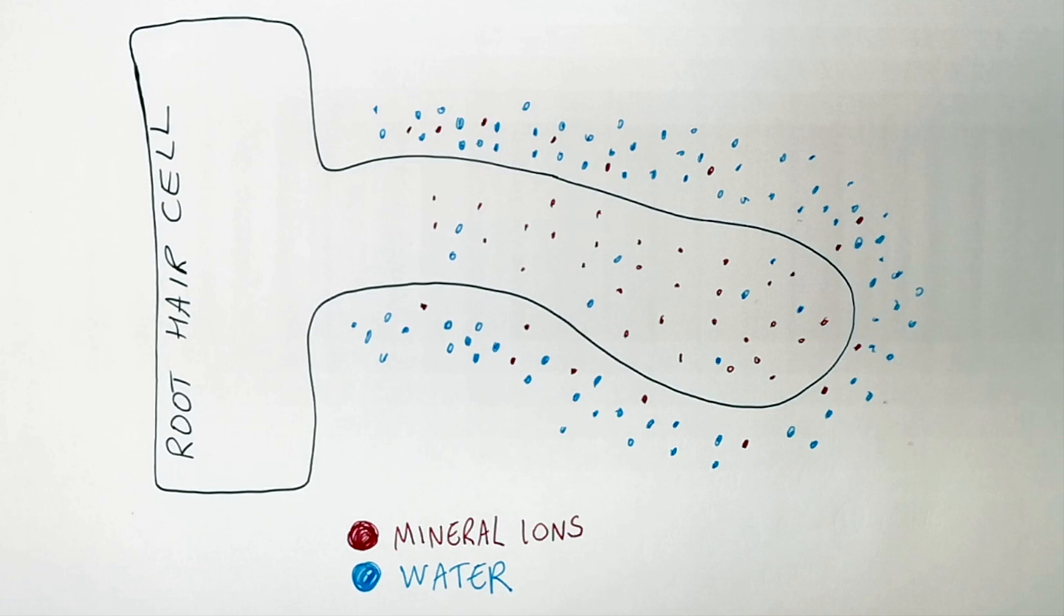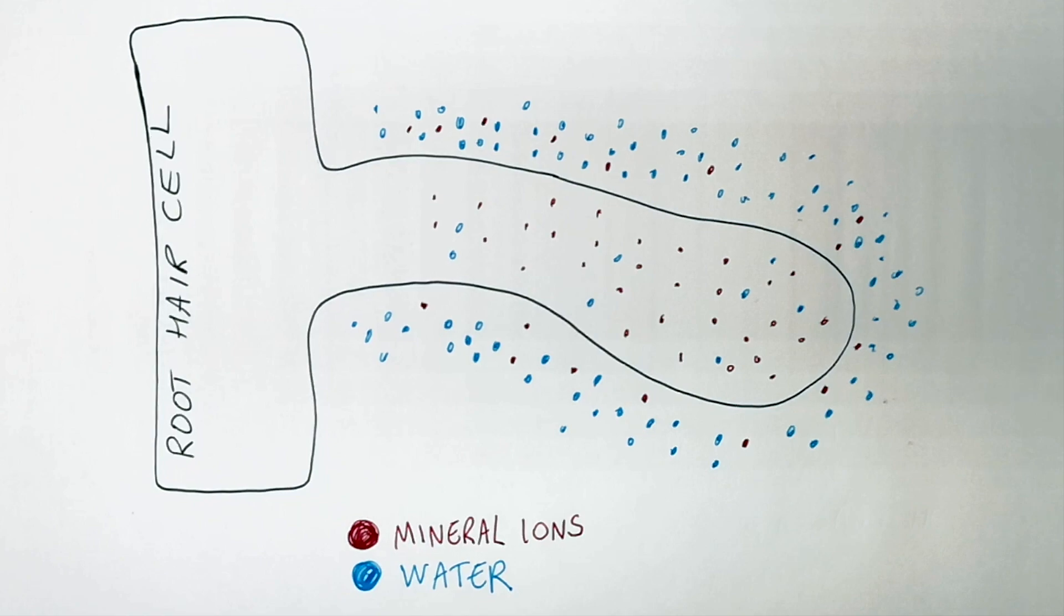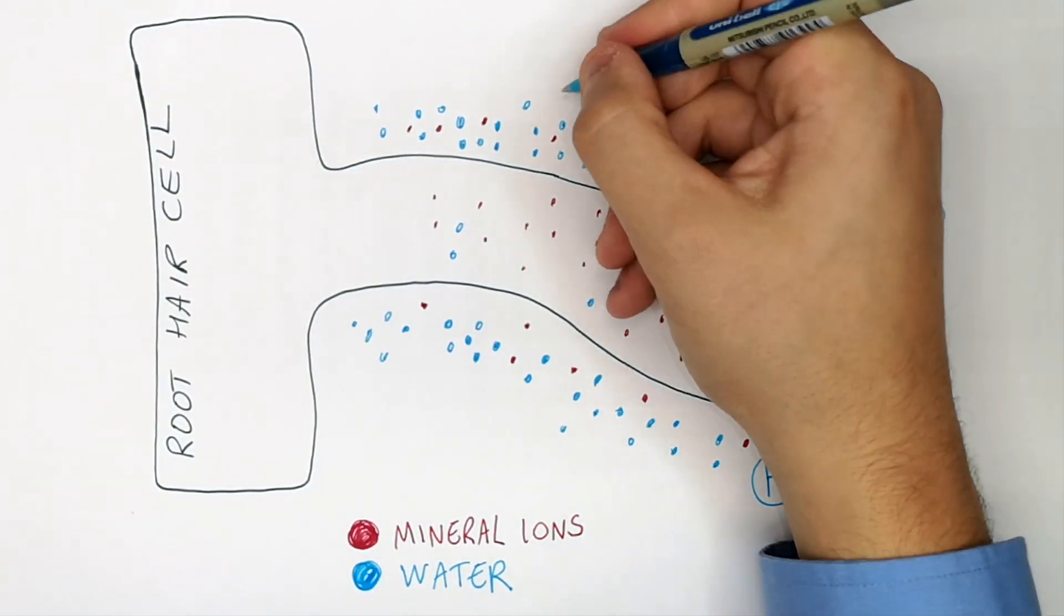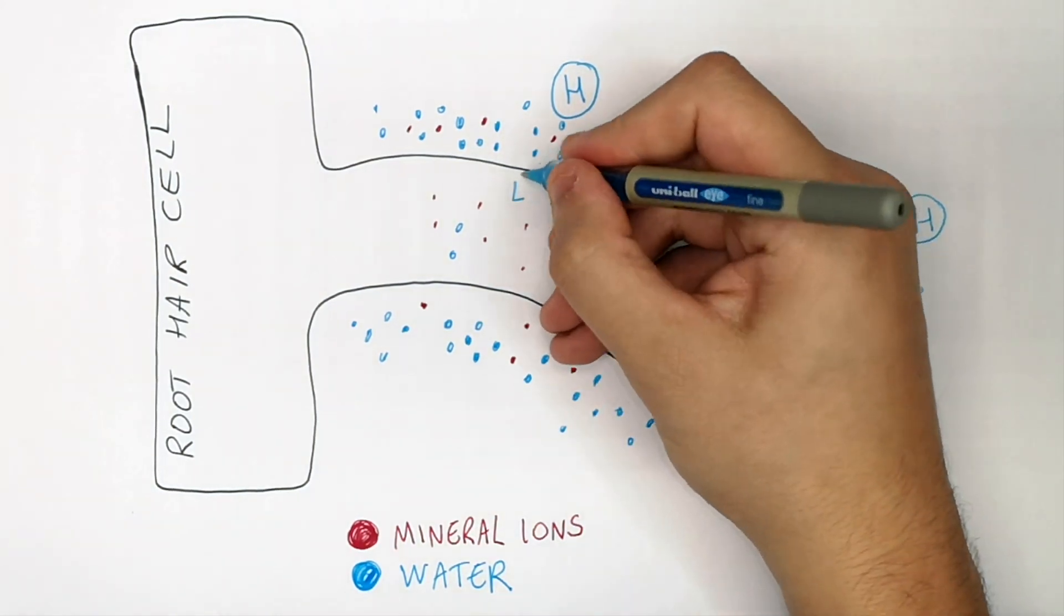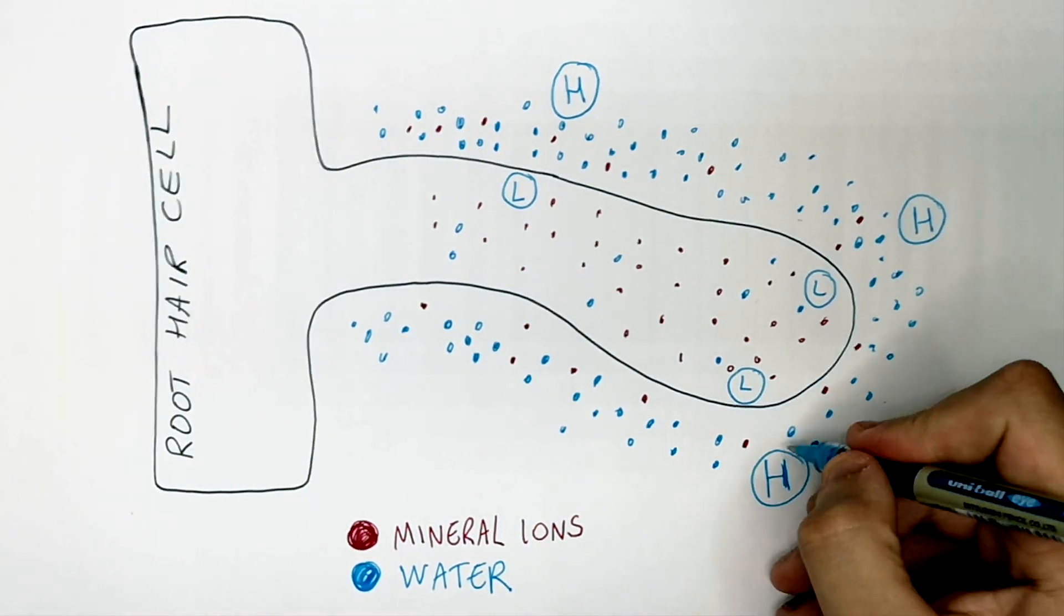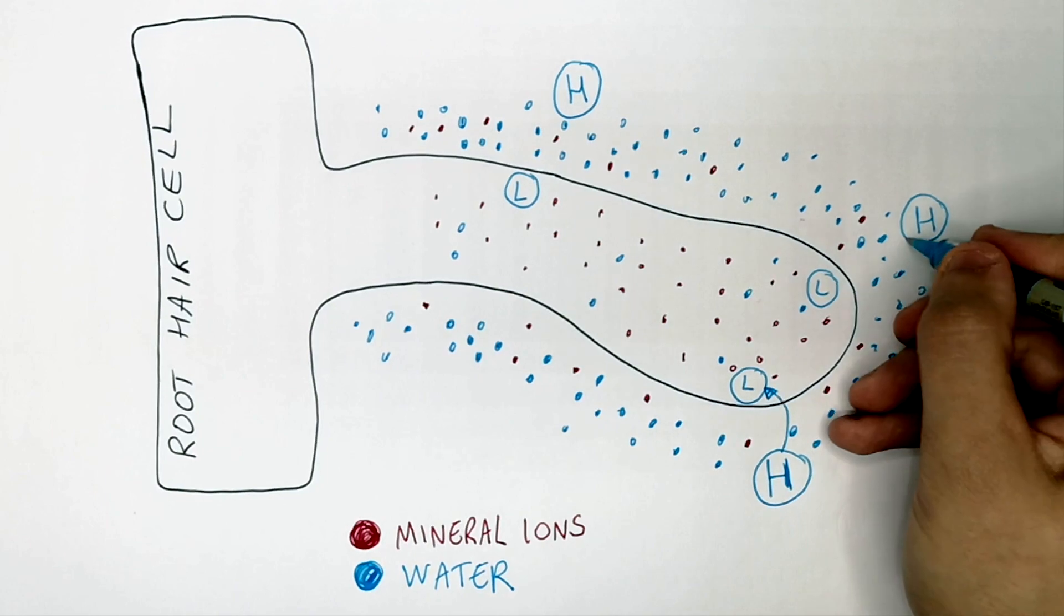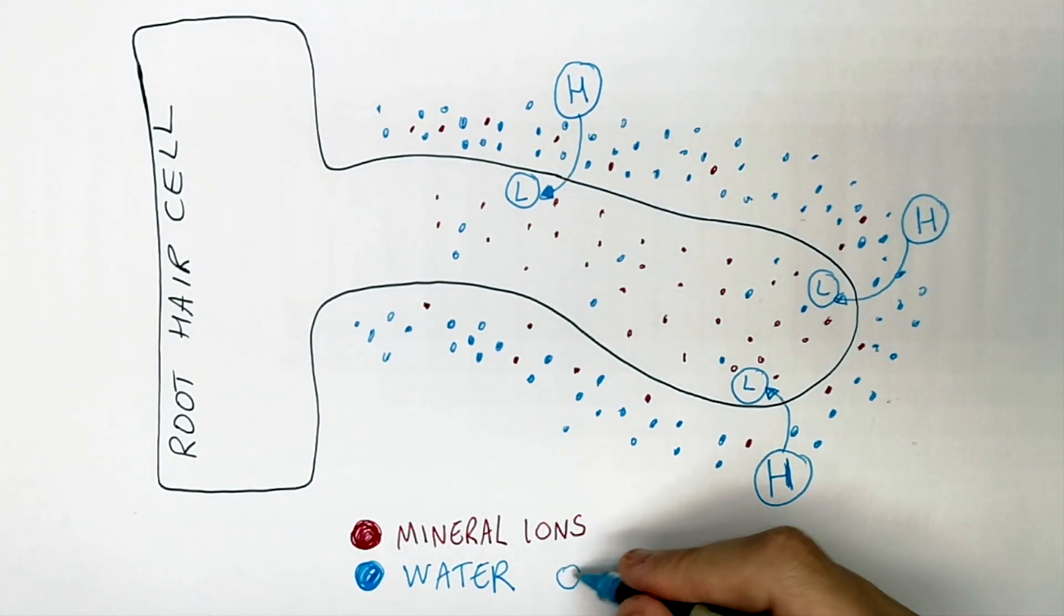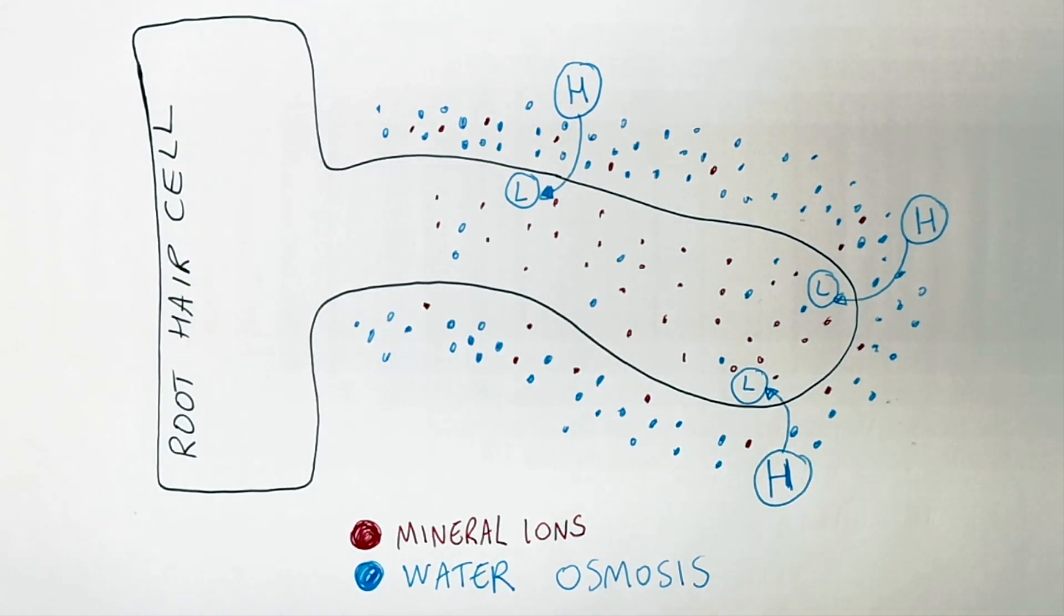So I'm now going to show you how a large surface area increases the rate of osmosis and how the root hair cell is adapted for active transport. There is a higher concentration of water on the outside of the cell in the soil than on the inside. There is a lower concentration of water inside the cell. So water will osmose from outside to inside the cell from a high to low concentration by osmosis. So water is transported by osmosis into the root hair cell.